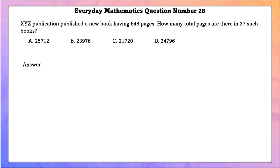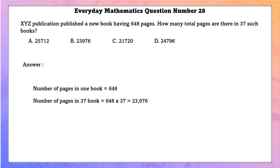Everyday Mathematics question number 28. XYZ publication published a book with 648 pages. The total number of pages in 37 such books is 648 × 37 = 23,976.